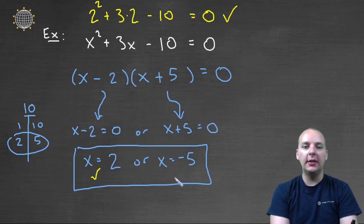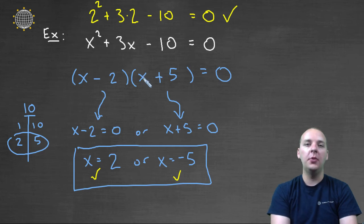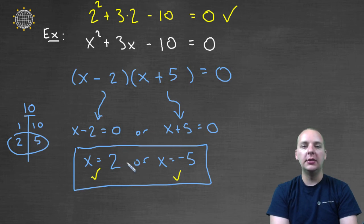And you can try this if you want to, but negative five would also be a solution. So this is the hands down most popular and common way to solve a quadratic equation. You factor it, and you set your individual factors equal to zero, and solve the individual linear equations to get your solution for the quadratic equation.